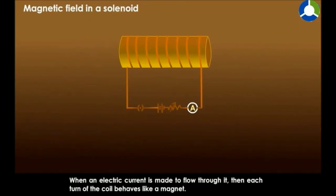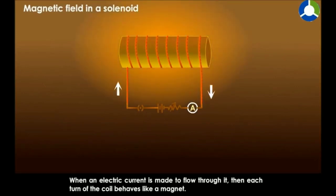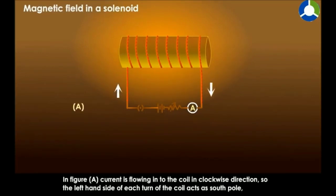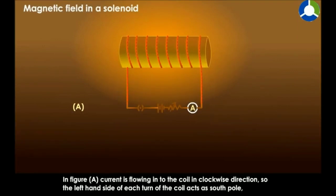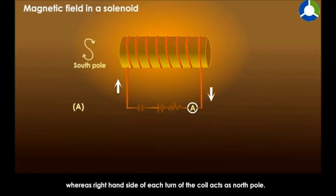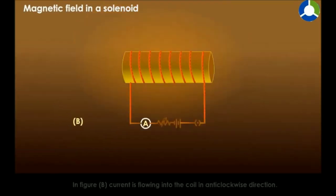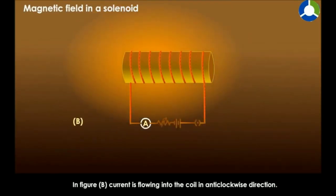We are going to understand the field pattern in the case of a solenoid, similar to what we discussed for a straight conductor and a circular current-carrying conductor. The current enters from one end and comes out from the other end. If we sprinkle iron filings around it, we find that the magnetic field originates from the north pole and comes to the south pole — outside it flows from north to south, and inside it flows from south to north.